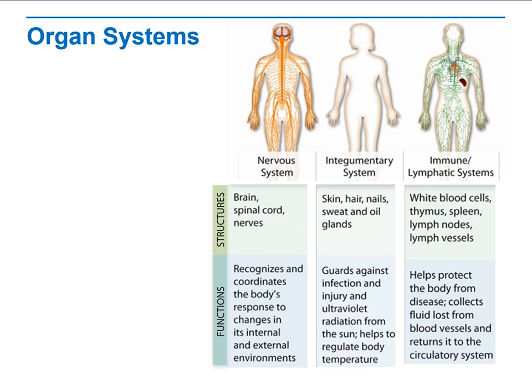The integumentary system, which is the skin, hair, nails, and the sweat and oil glands, all work together against infections and injuries, maintain protection from ultraviolet radiation from the sun, and help regulate your body temperature. The last one is the immune lymphatic system, which consists of white blood cells, thymus, spleen, lymph nodes, and lymph vessels. They help protect the body against diseases by collecting waste fluid from the remaining vessels from the blood and taking it back to the circulatory system.